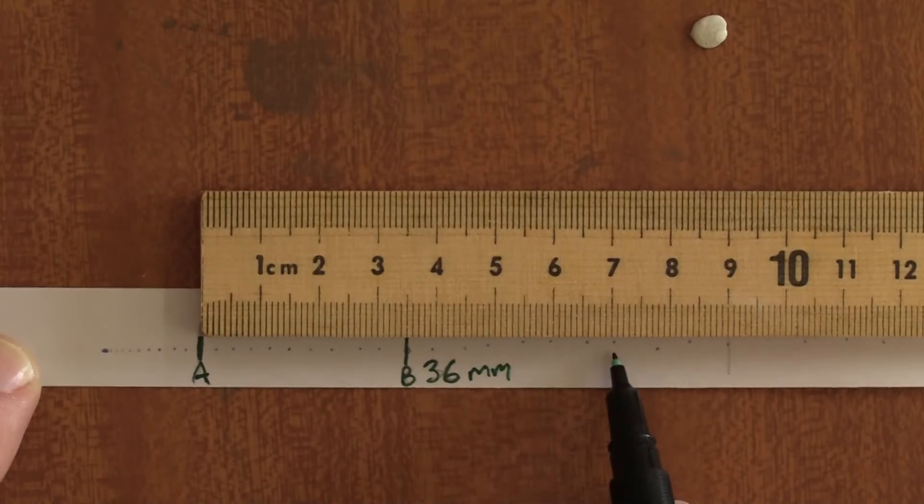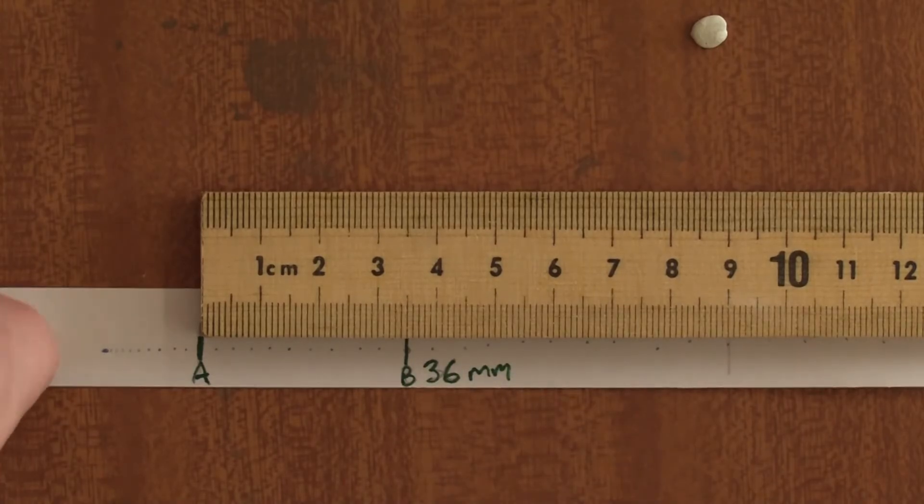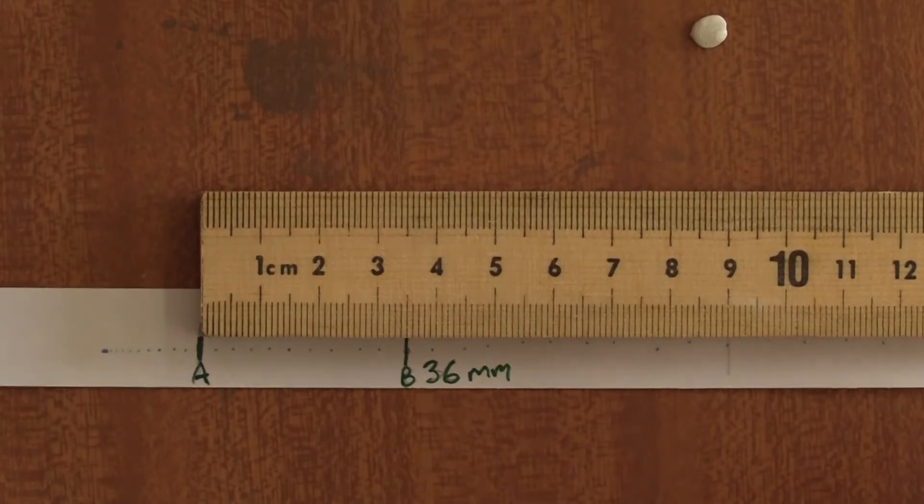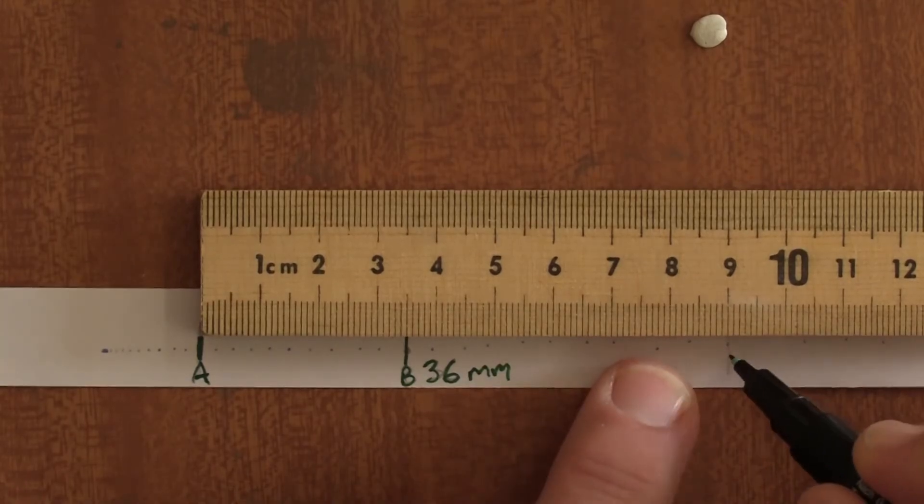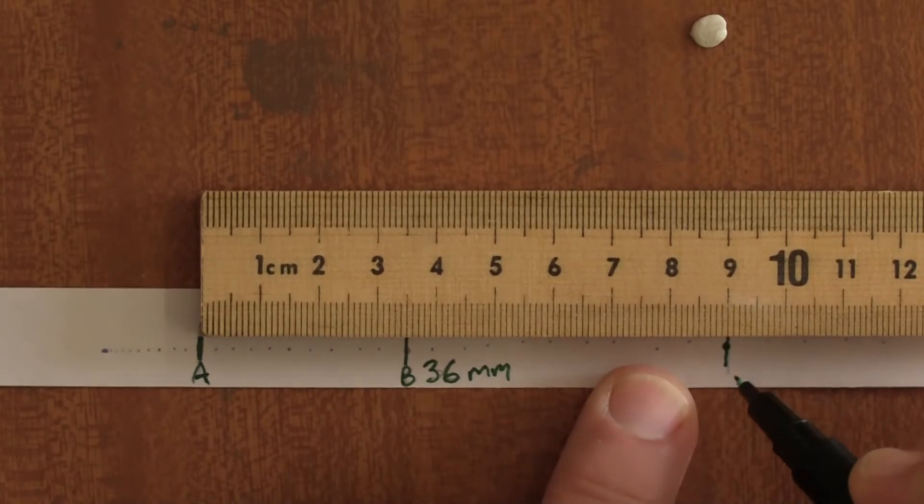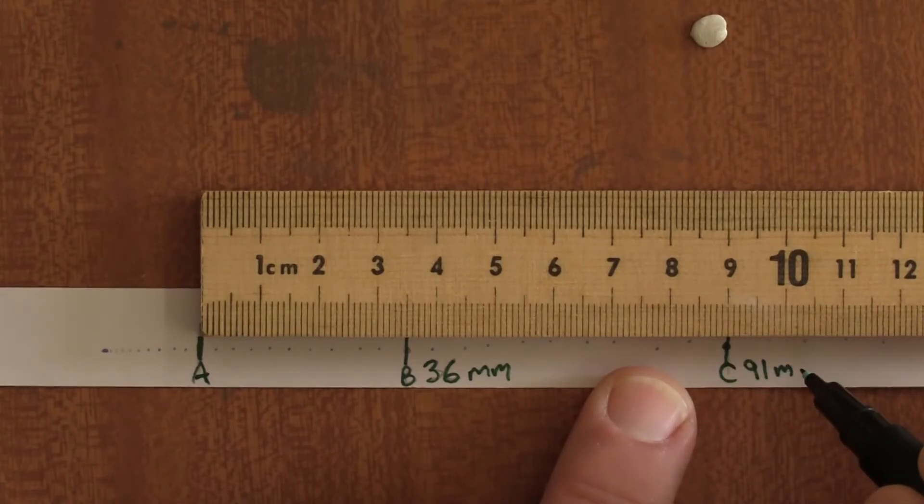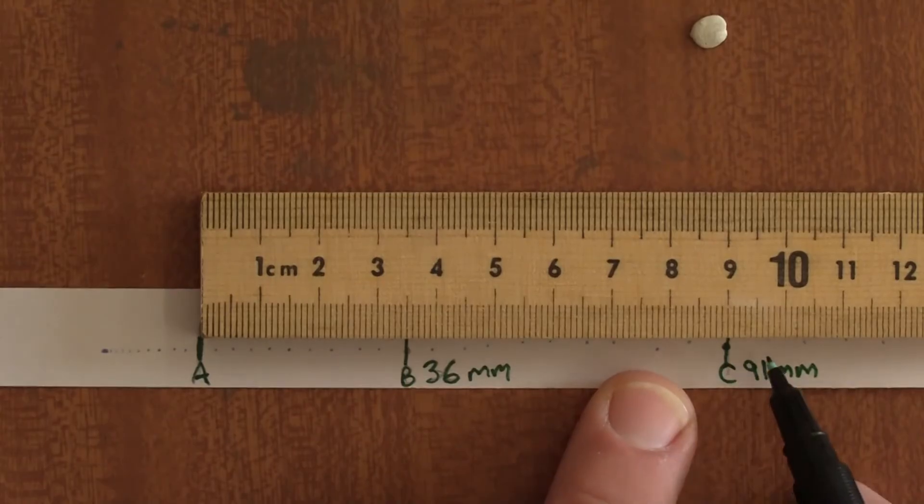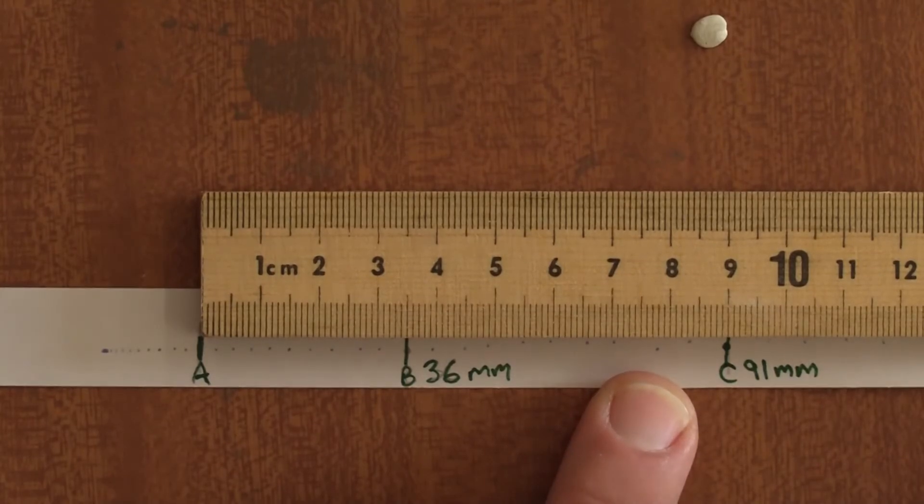3, 4, 5, 6, 7, 8, 9, 10. And now we get point number C, which is a distance 91 millimeters from the start. And so we continue until we have 5 such intervals.